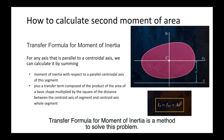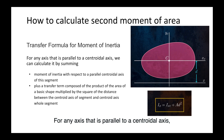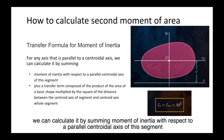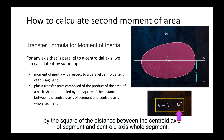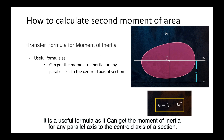The transfer formula for moment of inertia is a method to solve this problem. For any axis that is parallel to a centroidal axis, we can calculate it by summing the moment of inertia with respect to the parallel centroidal axis of the segment, plus a transfer term composed of the product of the area of the basic shape multiplied by the square of the distance between the centroid axis of the segment and the centroid axis of the whole section. This is a useful formula as it gives the moment of inertia for any parallel axis to the centroid axis of a section.